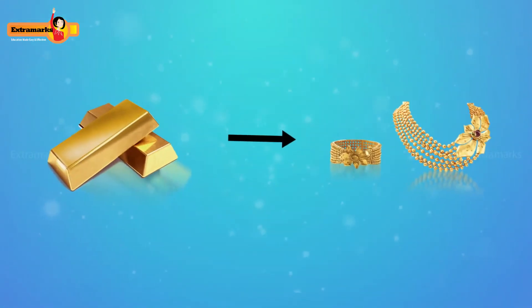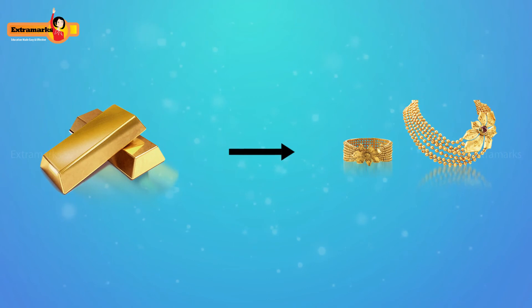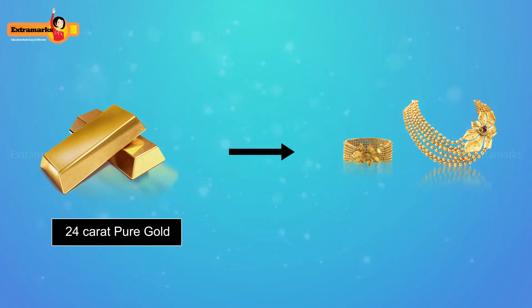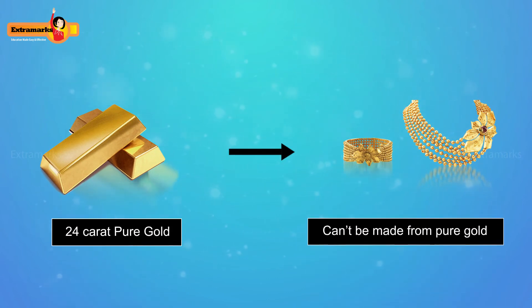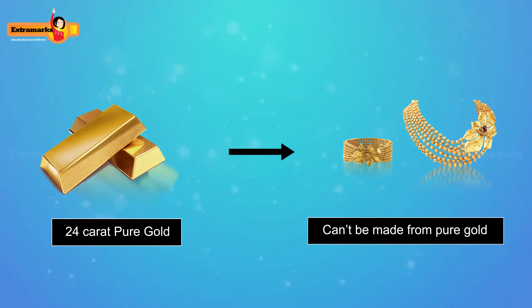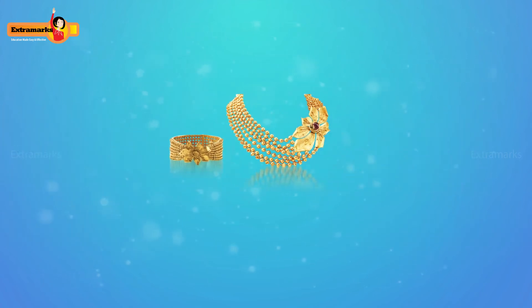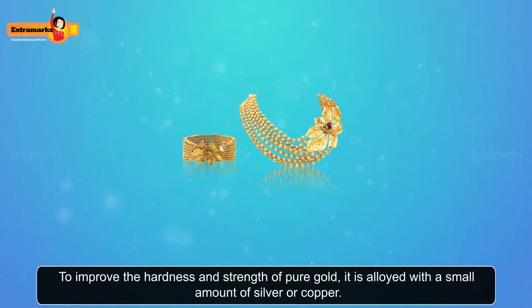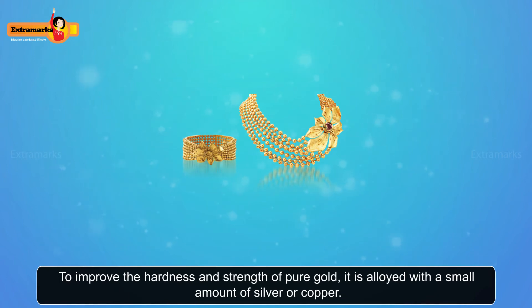24 karat gold is considered pure gold, but it cannot be used for making ornaments as it is very soft. To improve the hardness and strength of pure gold, it is alloyed with a small amount of silver or copper.